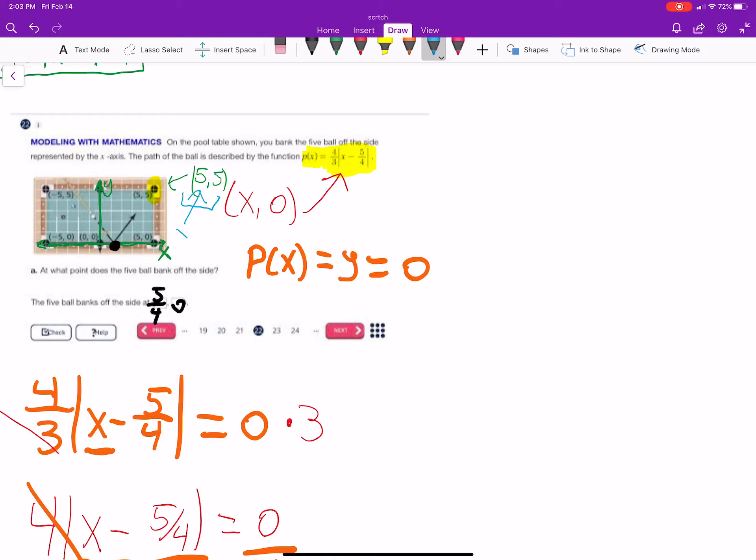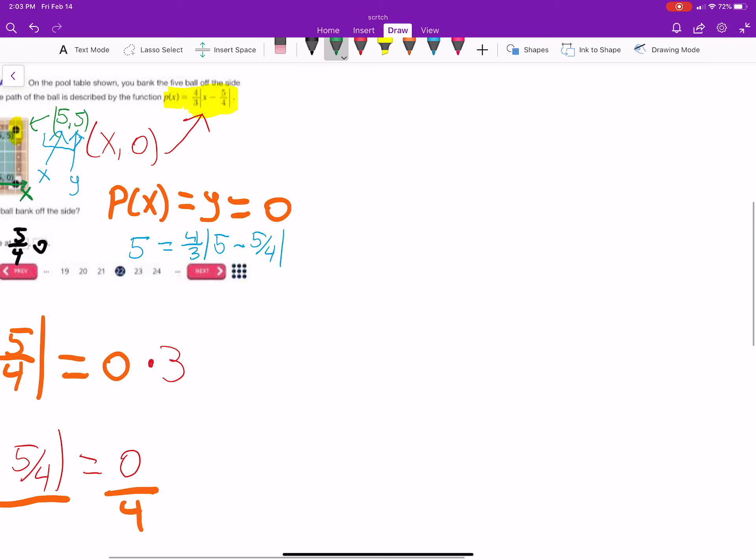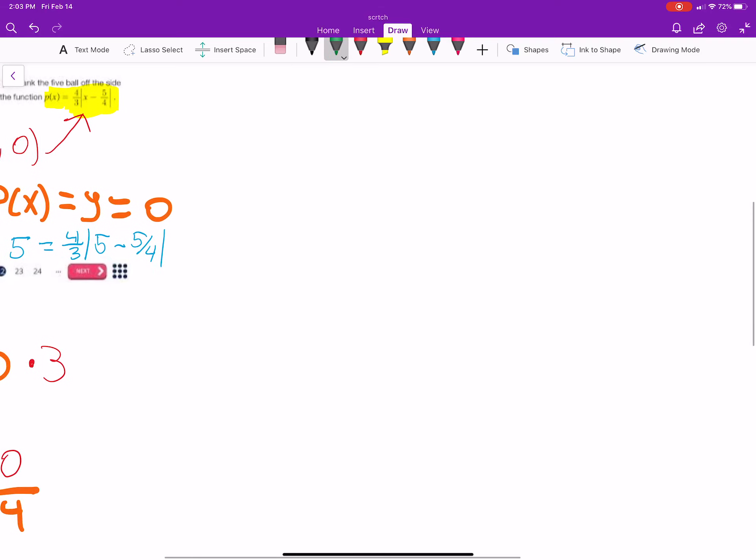So, this is an x value, and this is a y value. So, I could say, is p of x, which we're calling y, which in this case is 5, equal to 4 thirds, the absolute value of x. Well, the x for that pocket is 5 minus 5-fourths. All we have to do is a little bit of math. So, I'm going to do that over here.